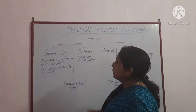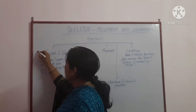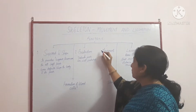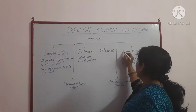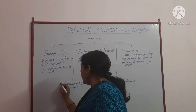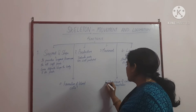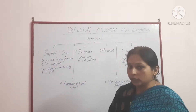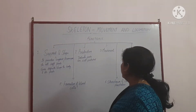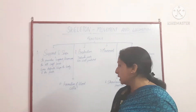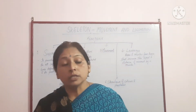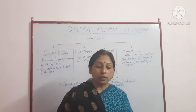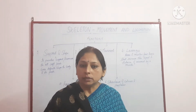Let's start with the functions of the skeletal system. The first function is support and shape. Second is protection. Third is movement. Fourth is leverages. Fifth is formation of blood cells. Sixth is storehouse of calcium and phosphorus. If this question is asked for one or two marks, you have to write only these points.